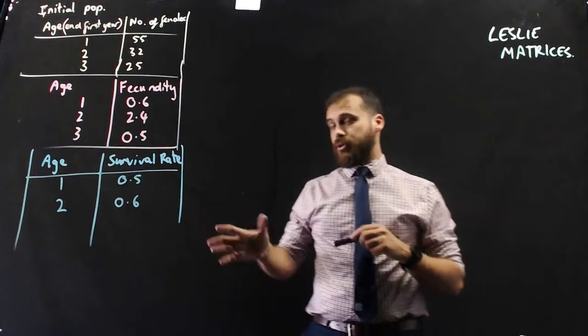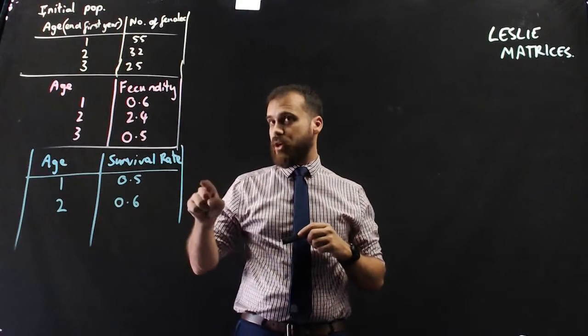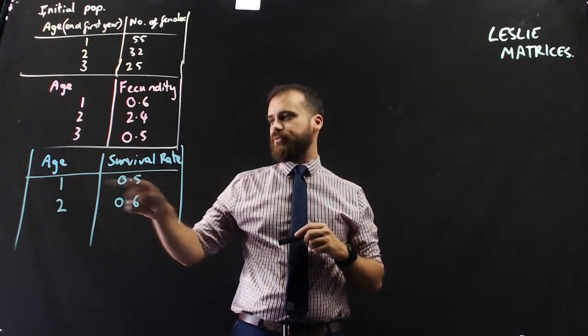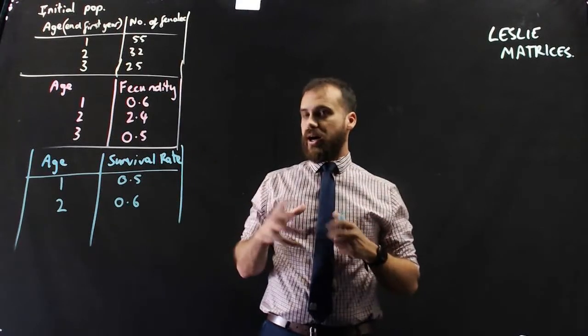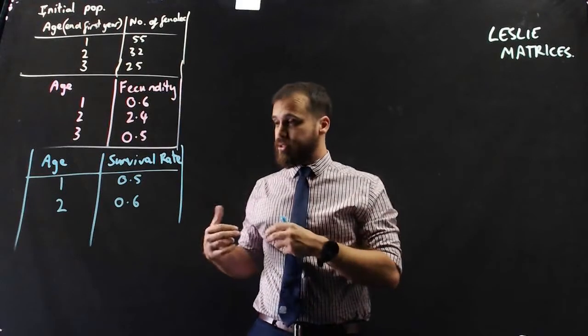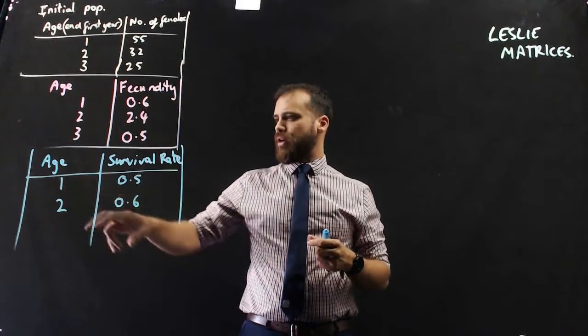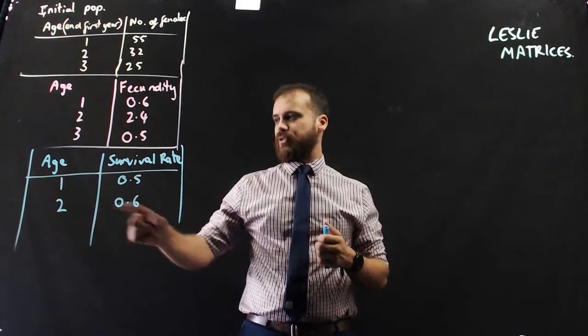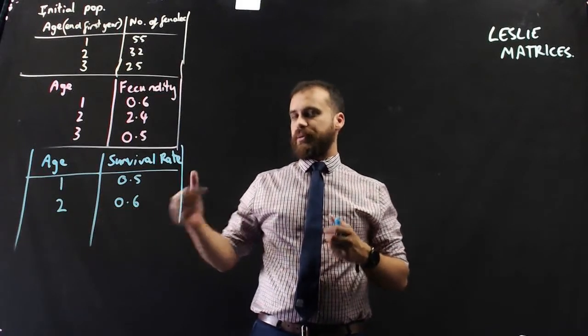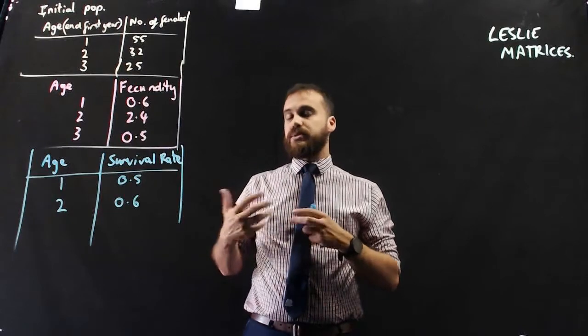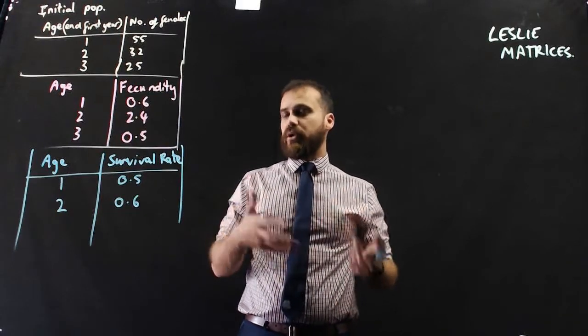Finally we have our survival rates. We expect a survival rate of 0.5 for one-year-olds. That means half of the one-year-olds are going to survive, half aren't going to survive. And a survival rate of 0.6 for the two-year-olds. That means 60% will survive, 40% won't.